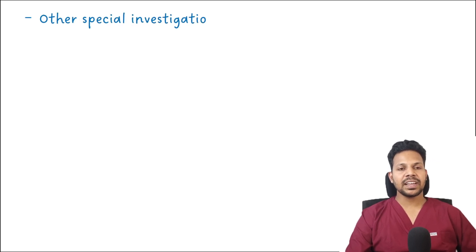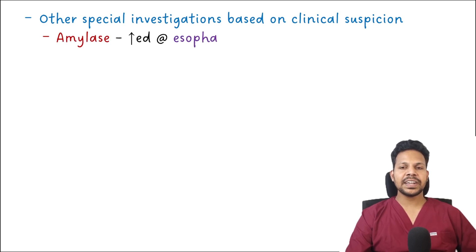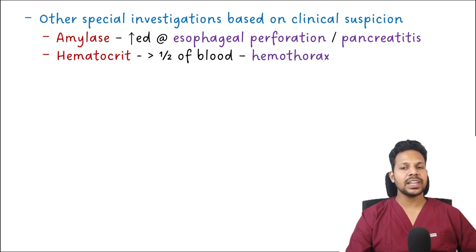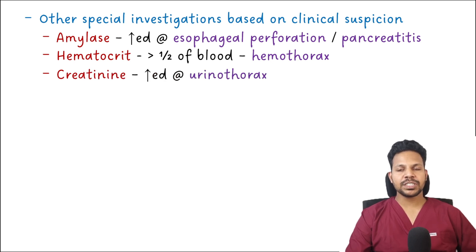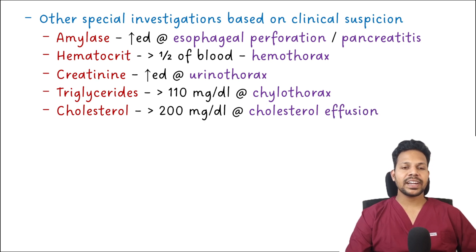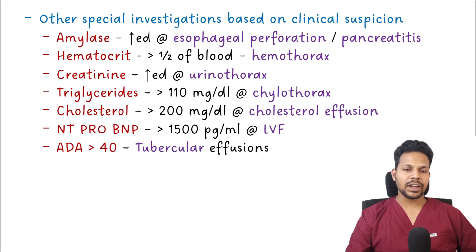Special investigations for specific diseases: amylase is elevated in esophageal perforation or pancreatitis; hematocrit more than half of blood confirms hemothorax; creatinine may be elevated in urinothorax; triglycerides more than 110 mg/dL indicate chylothorax; cholesterol more than 200 mg/dL indicates cholesterol effusion; NT-proBNP levels elevated more than 1500 pg/mL suggest LV failure; and ADA levels above 40 indicate tubercular effusion.